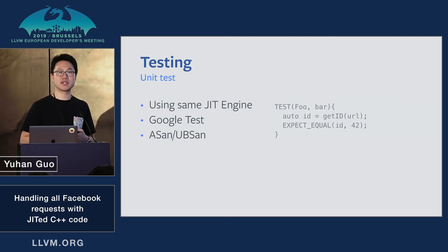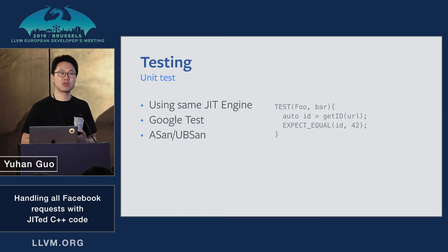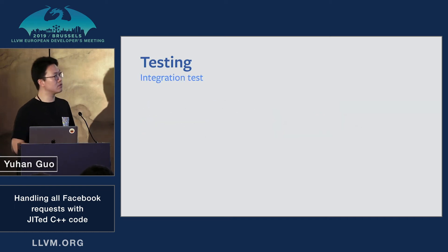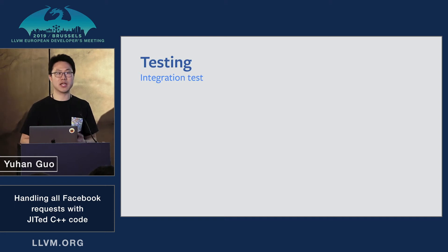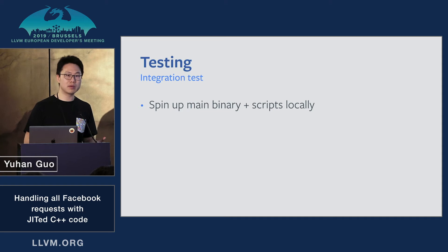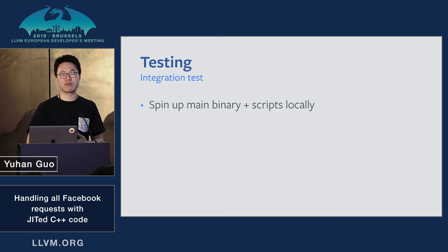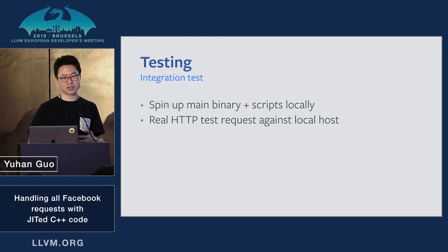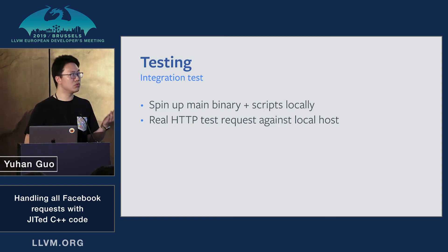We also integrate with AddressSanitizer and UndefinedBehaviorSanitizer in the test framework, allowing us to catch bad behaviors like null pointer memory access or unfreed memory, ensuring scripts are safe. The integration test tries to mimic the real production environment as closely as possible — we spin up the main binary and let it consume the real production scripts locally, then send real HTTP test requests against localhost to simulate end-to-end workflow and test real client behavior.